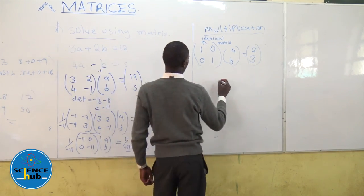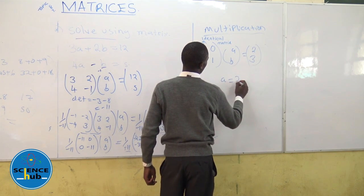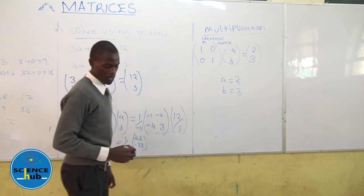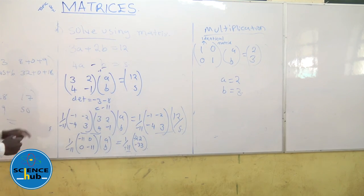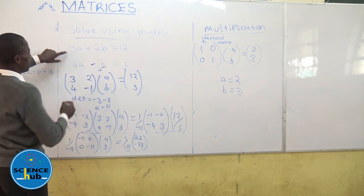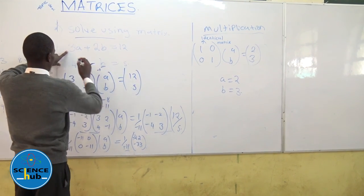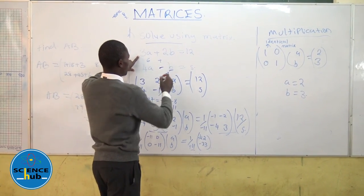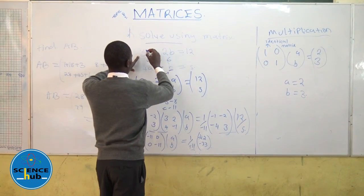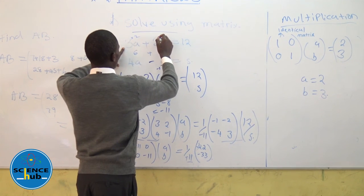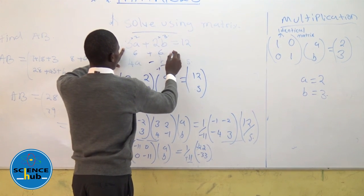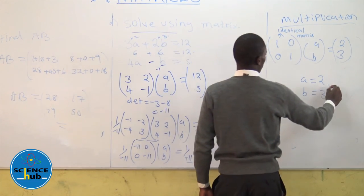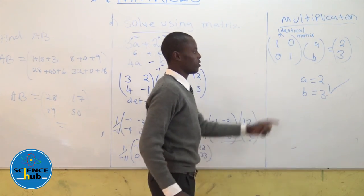Hence A equals 2 and B equals 3. You can come back to the equation and confirm your answers. If you take 3 times 2 plus 2 times 3, you get 6 plus 6 equals 12. Hence you can see the answer has been verified.